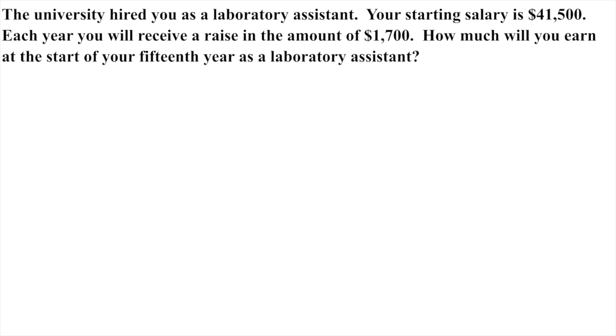The first thing we need to determine is if it's an arithmetic or a geometric sequence. Remember that geometric sequences mean we have some value that we're starting with and we're multiplying that value by some number, whether positive or negative. Arithmetic is that we're adding or subtracting a certain number every time. This one says you receive a raise in the amount of $1,700, so it's a fixed amount. We're going to get the same amount every time, so that would be an arithmetic sequence.